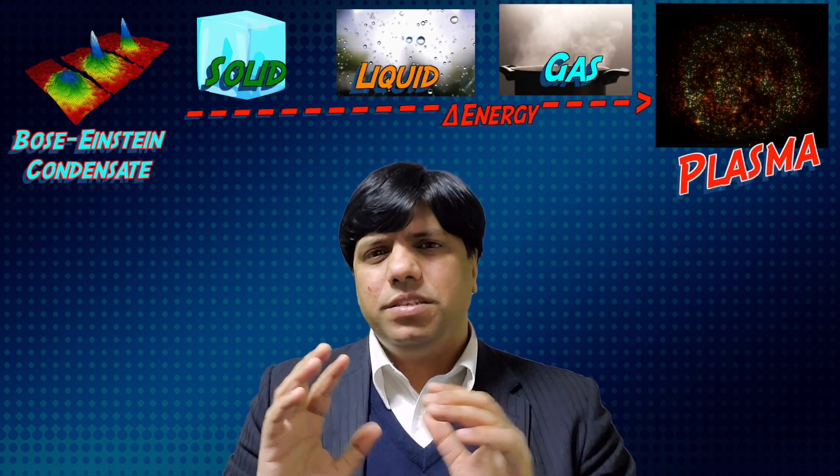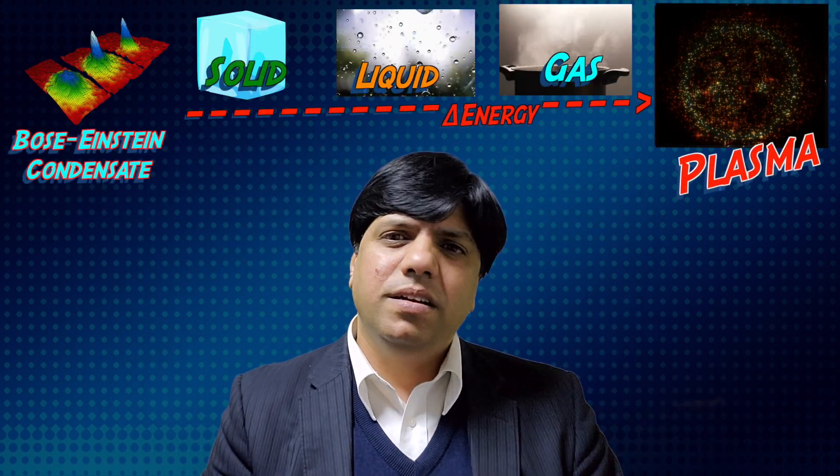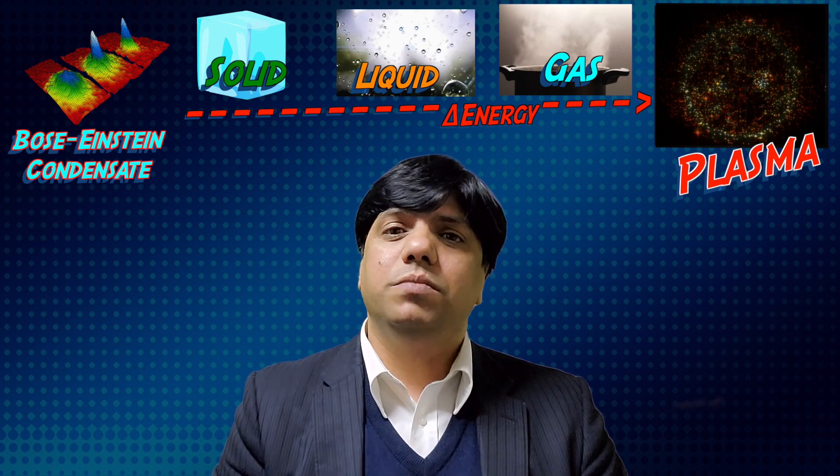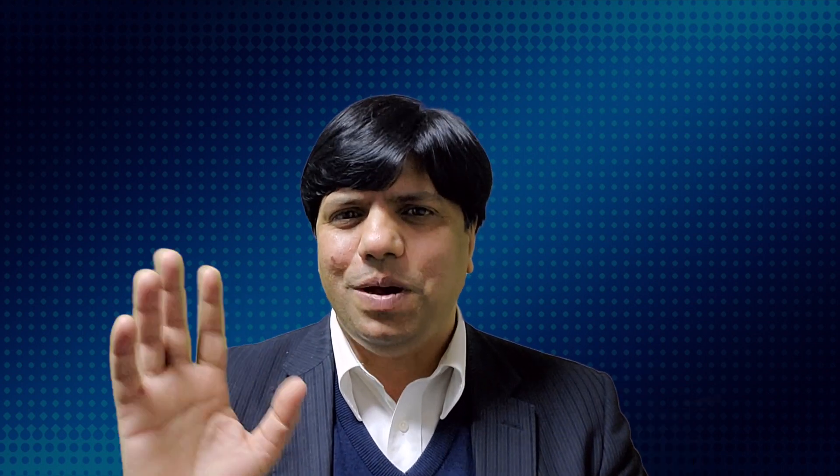So today, we'll just conclude with these five states of matter. And if you want me to do the experiment on how to create the fourth state of matter — i.e. plasma — in your home, just with a microwave oven, let me know in the comment section. If someone requests, I will definitely do that. Thank you for watching, and as always, please like, subscribe, comment, and I will see you in the next one. Until then, bye-bye.